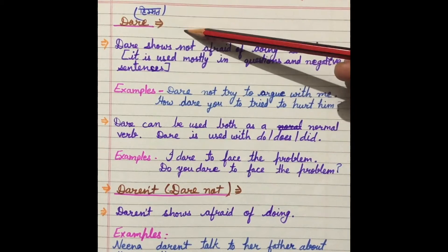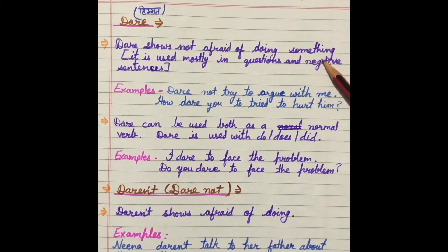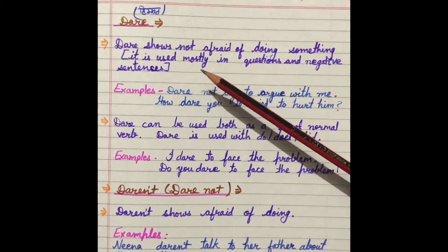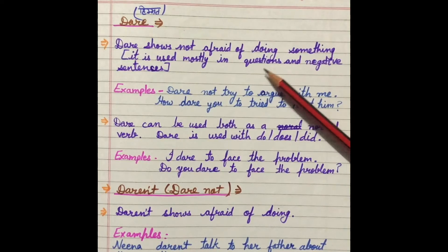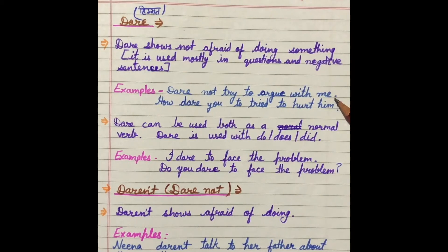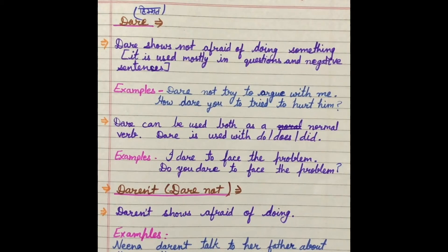Next modal is 'dare'. Dare का meaning होता है हिम्मत. Dare shows not being afraid of doing something — कि हम किसी काम को करने से नहीं डरते. It is used mostly in questions and negative sentences — interrogative या negative sentences में. For example: 'Dare not try to argue with me' — मुझसे बहस करने की हिम्मत मत करना — this is a negative sentence. 'How dare you try to hurt him?' — तुम्हारी हिम्मत कैसे हुई उसे चोट पहुँचाने की.